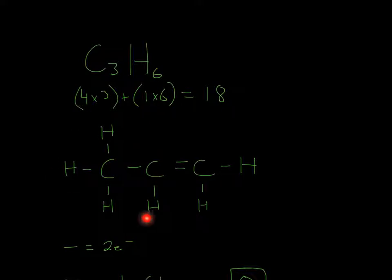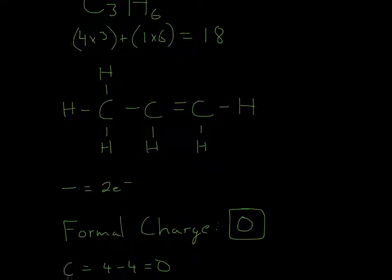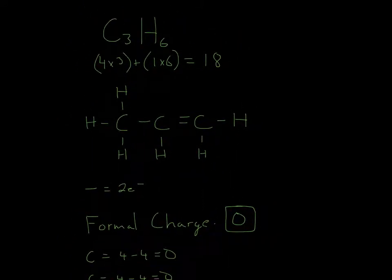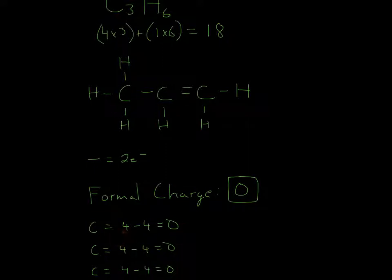After you have your structure — each dash means 2 electrons — we can do formal charge. For formal charge, all you do is just count each dash line as 1. So 1, 2, 3, 4 around this carbon. Since carbon is a group 4 element, it will be 4 minus whatever you get here. So 4 minus 4 is 0.